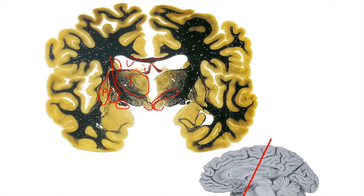The mammillary bodies receive input from the hippocampus via the fornix and then supply information to the thalamus via the mammothalamic tracts — dark white matter tracts heading from the mammillary bodies up to the thalamus. The hippocampus and mammillary bodies signal that what's happening right now is important and needs to be remembered, reinforcing the firing neurons so they wire together and get stronger. That is the basis of memory formation.